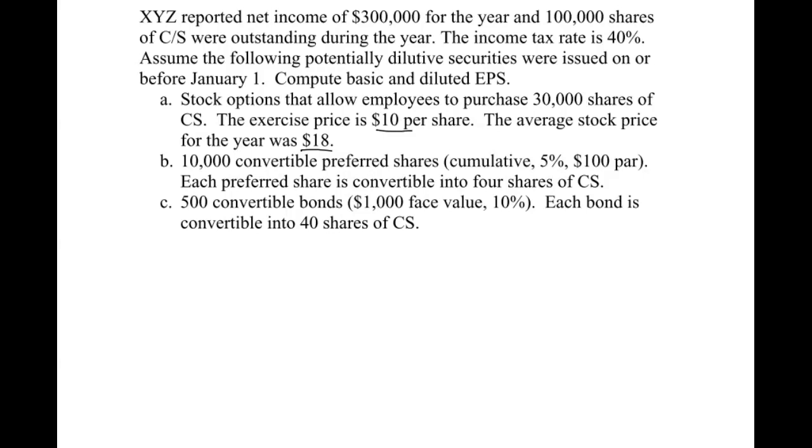We've got convertible preferred. So remember convertible means we have to look at it in diluted. Cumulative tells us that regardless of whether the dividend was declared or not, we're going to subtract it. So if you're not sure what I'm talking about there, make sure you go back and watch the earlier video when we did convertible preferred stock in the diluted section of these videos. But cumulative just means we subtract the dividend from basic and then convertible cumulative just means that we're going to add it back in diluted.